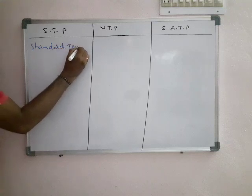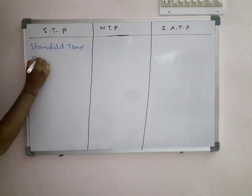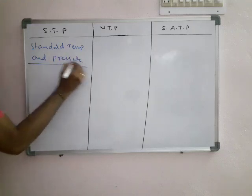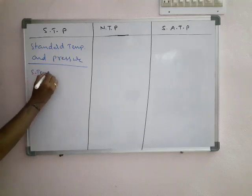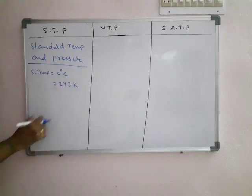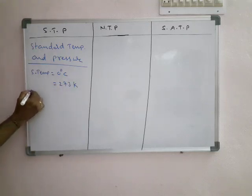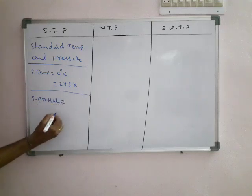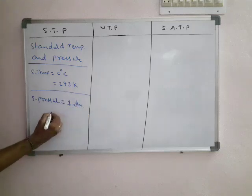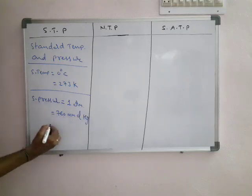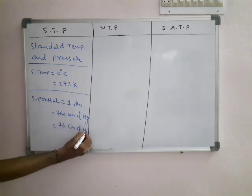STP stands for Standard Temperature and Pressure. The standard temperature is 0 degrees Celsius or 273 Kelvin. The standard pressure is 1 atmosphere, or 760 mm of Hg, or 76 cm of Hg.